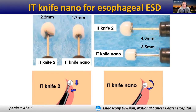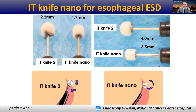In terms of ESD device, the IT knife nano is specially designed for esophageal and colorectal ESD. The IT knife nano has a smaller insulative ceramic tip and a shorter blade compared with the IT knife 2, which is mainly used for gastric ESD. The IT knife nano facilitates entering the submucosal space, and its backside electrode is small and disc-shaped, which minimizes injury to the muscle layer, allowing us to reduce the risk of perforation.